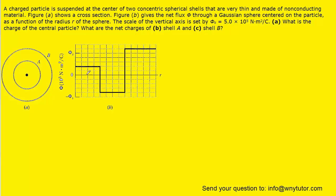In order to understand the solution to this question, we want to look at the graph and note that there are three distinct values for the electric flux. We have a constant electric flux colored in red, a second value colored in blue, and a third value colored in orange. We'll notice that those three electric fluxes are located at different values for R.